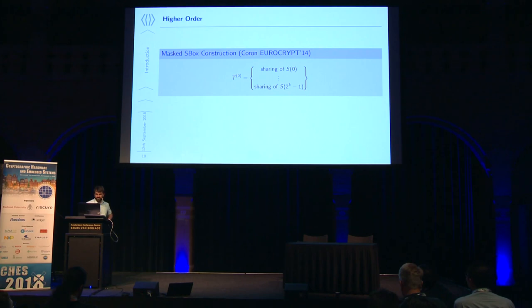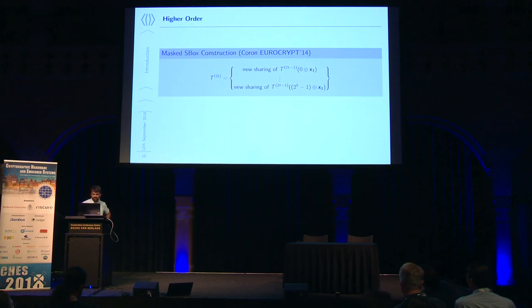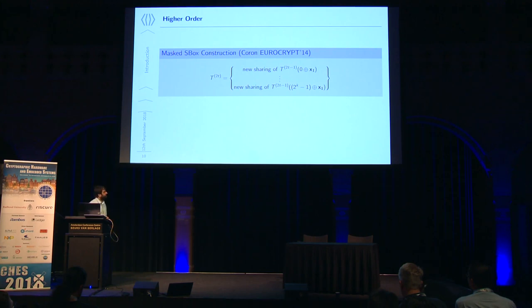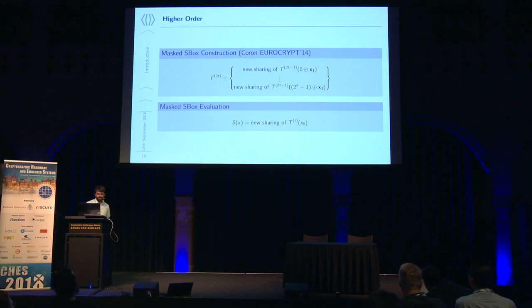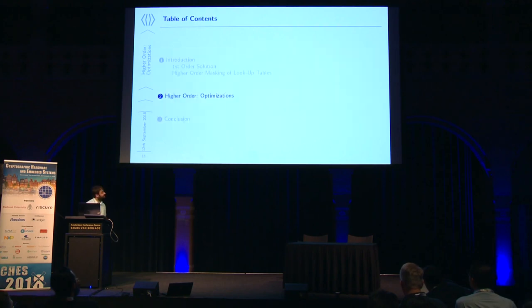To rephrase this at order T: you have to recompute 2T tables each time you want to securely evaluate S(X). This is different from the first-order case where you could pre-compute the tables for all subsequent evaluations. This is a costly solution, so now we will see how we can optimize it.